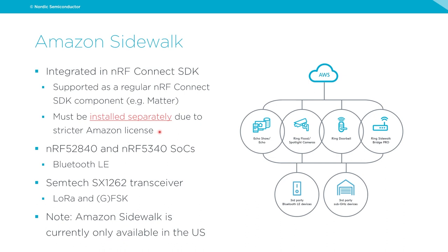The reason Amazon Sidewalk is installed separately relates to the stricter Amazon license. Partners who redistribute the NRF Connect SDK would also be redistributing Amazon Sidewalk, which the Amazon license doesn't allow. For new updates: both NRF52840 and NRF5340 SoCs are now supported for Bluetooth LE transport. We also have support for the Semtech transceiver for longer distances using Sub-GHz transport, LoRa, and FSK modulation. Note that Amazon Sidewalk is currently only available in the US.